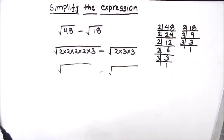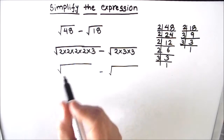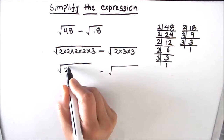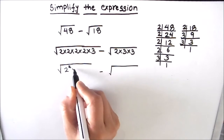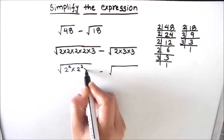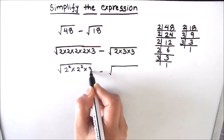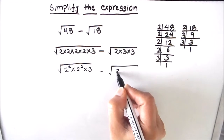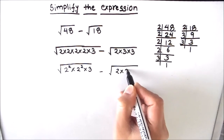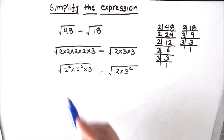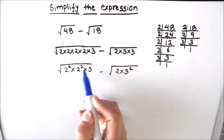Now we are going to write these factors in exponent form. That's going to be 2² × 2² × 3 for 48, and 2 × 3² for 18. The squared numbers will all come out of the square root sign, because the square and square root will cancel.